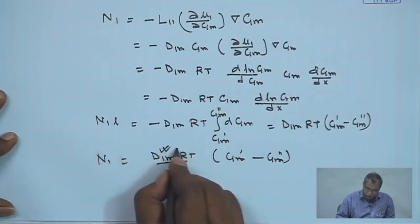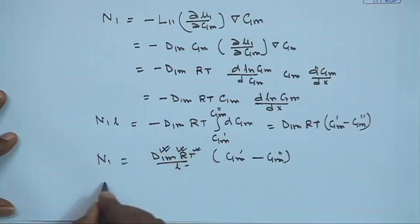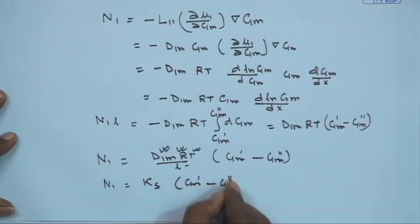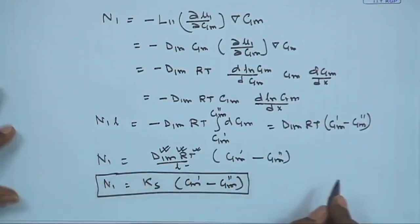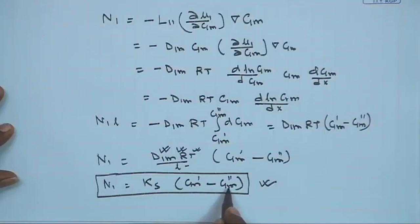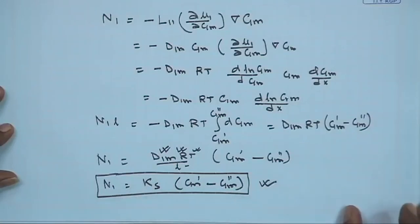Here R is the universal gas constant, T is temperature, and L is the membrane thickness — all constants. So N1 can be written as Ks times (C1m prime minus C1m double prime), meaning the solute flux is proportional to the concentration difference. Comparing: the solvent flux through the membrane is the membrane permeability multiplied by the effective pressure difference (delta p minus delta pi), while the solute flux is proportional to the concentration difference across the membrane multiplied by a proportionality constant Ks. These quantify the transport laws of solute and solvent through the dense membrane.